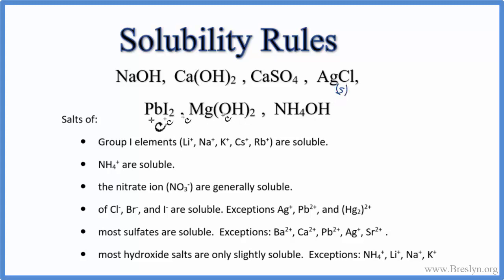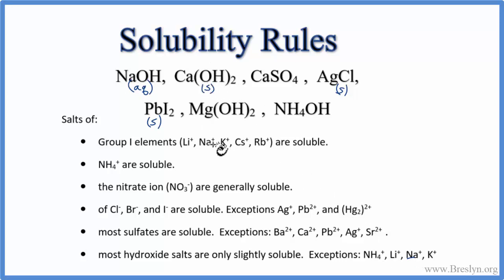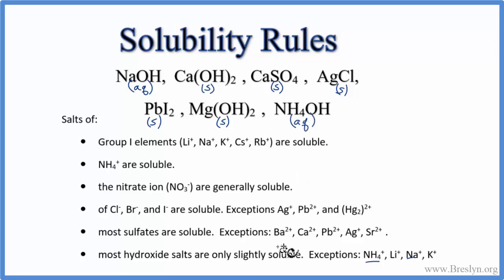Let's get AgCl and PbI2 out of the way immediately — you see those a lot in chemistry, and they're insoluble. NaOH is one of the exceptions: we have that group 1 Na, so that's aqueous. Calcium hydroxide is not an exception, so that's insoluble — it'll be a solid. Calcium sulfate: sulfates in general are soluble, but calcium was an exception, so that's insoluble — write S. Magnesium hydroxide: hydroxides are sparingly soluble, so we put solid. Ammonium hydroxide is one of our exceptions — the ammonium ion makes it aqueous.